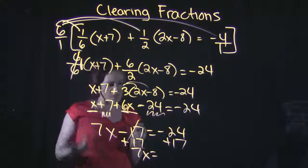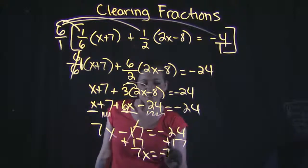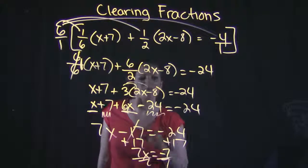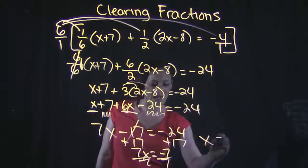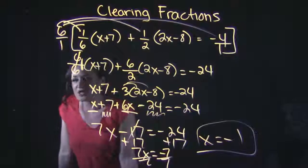And that's, let's see, negative 24 plus 17, that is negative 7. And when I divide out both sides by 7, I get that x is equal to negative 1, equation solved.